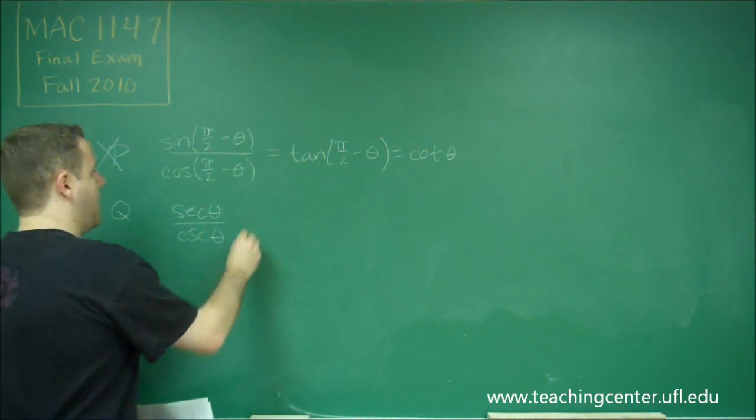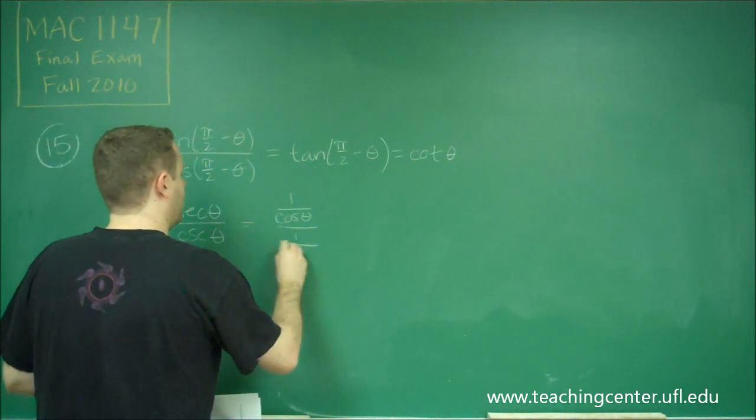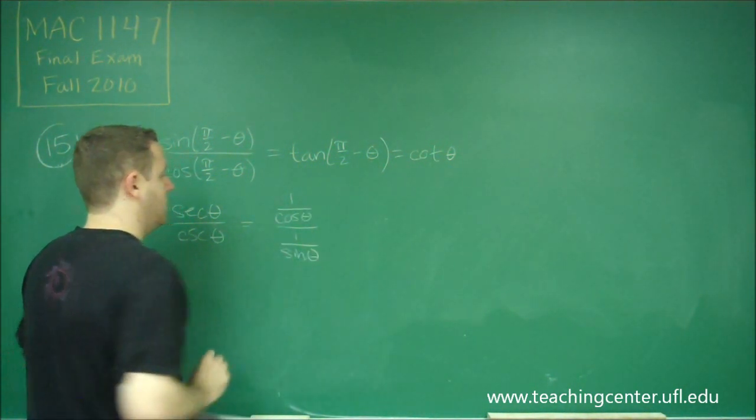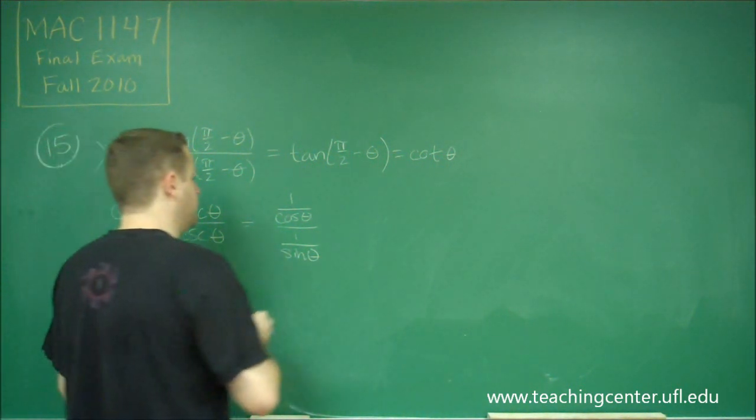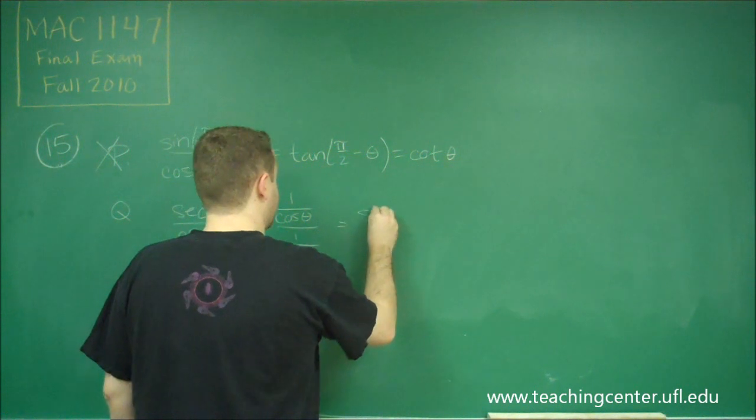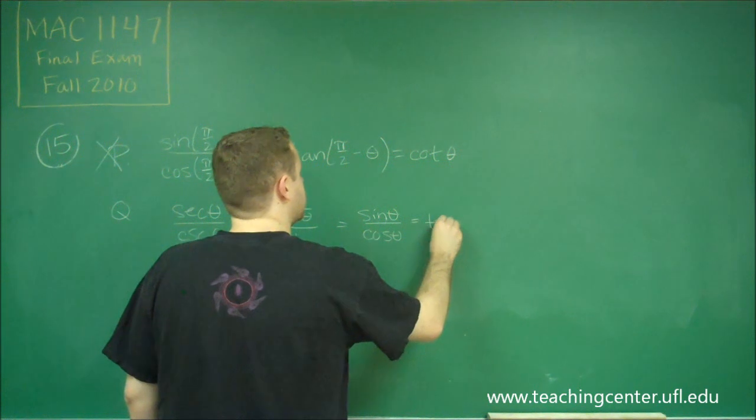Remember that this is equal to 1 over cosine theta over 1 over sine theta. By flipping the appropriate fractions, you'll get that this is equal to sine theta over cosine theta, which is equal to tangent theta.